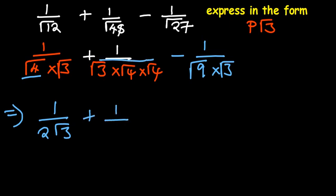For this middle part, we'll have 1, root of 4 is 2, 2 times 2 is 4. So we have 4 and then root of 3, and then minus 1. Root of 9 is 3. 3 root 3.